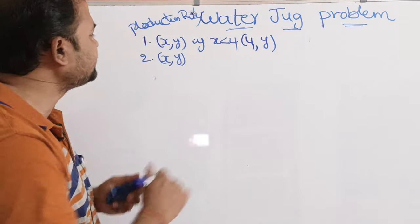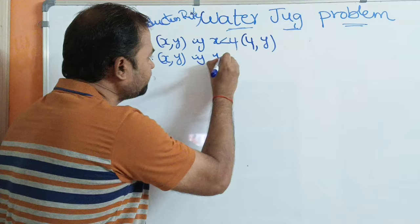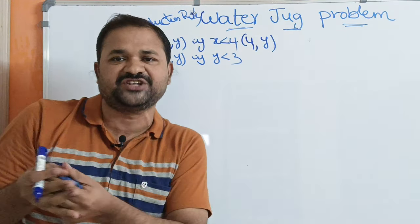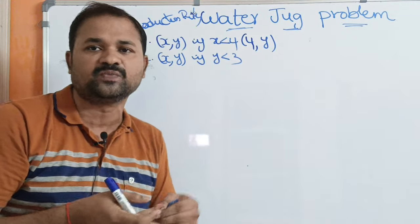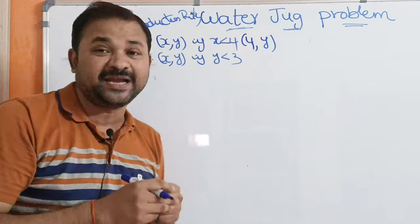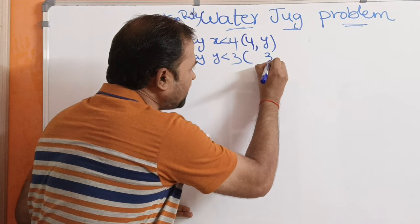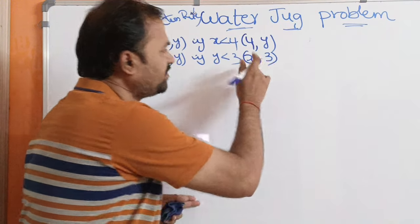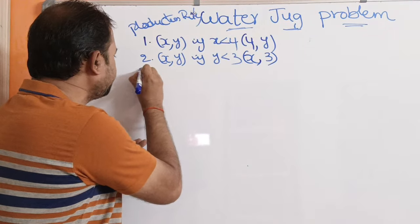The second production rule: if the current state is (x, y) and y is less than 3 — where y is the amount of water in the 3-liter jug — then we can fill the 3-liter jug completely. So the new state becomes (x, 3), where x remains unchanged.